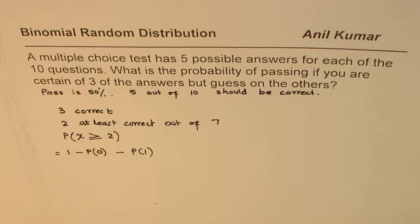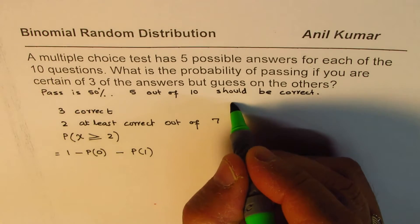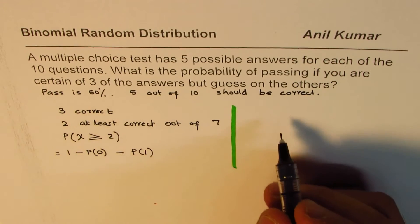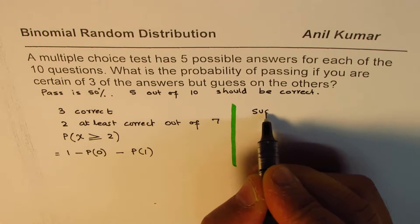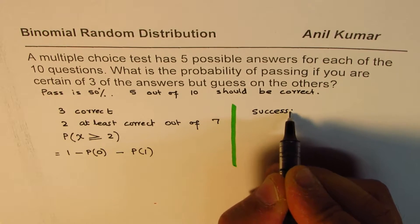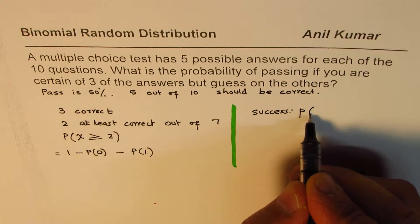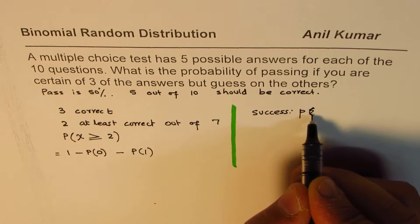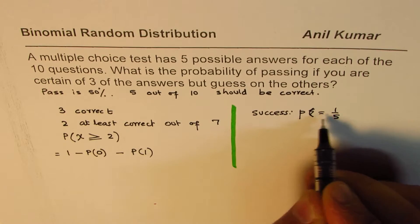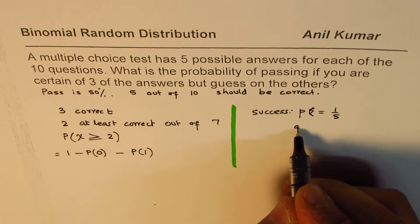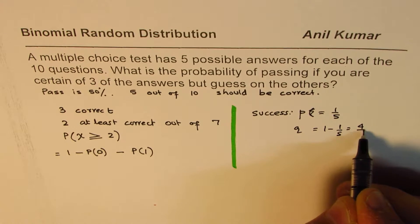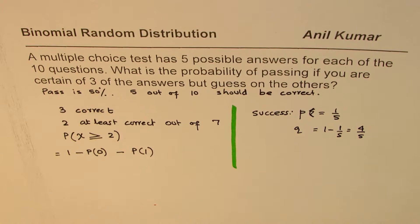Every question has 5 choices. Obviously, 1 is correct. So success, let's say probability for success is what? Probability of success is equals to 1 out of 5. And that of failure will be 1 minus 1 out of 5 or 4 out of 5. Because if there are 5 possible choices, only 1 is correct.